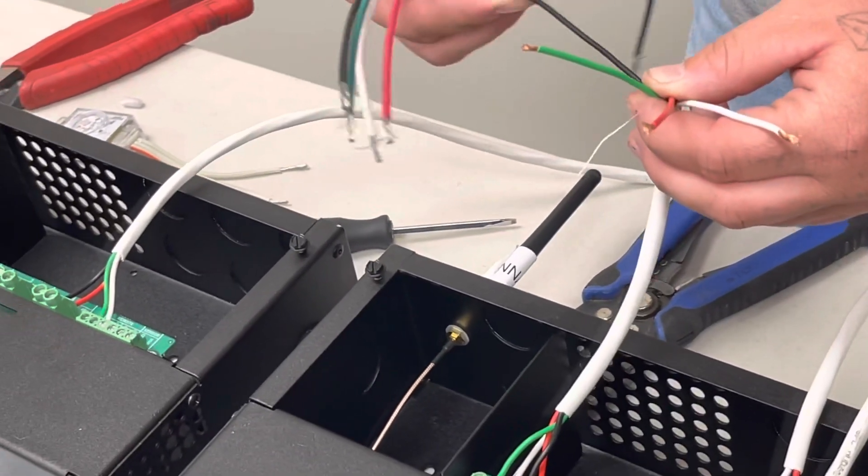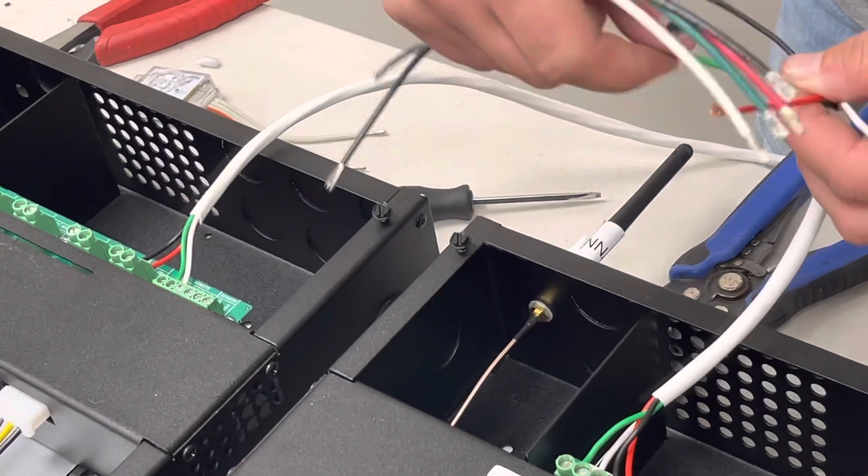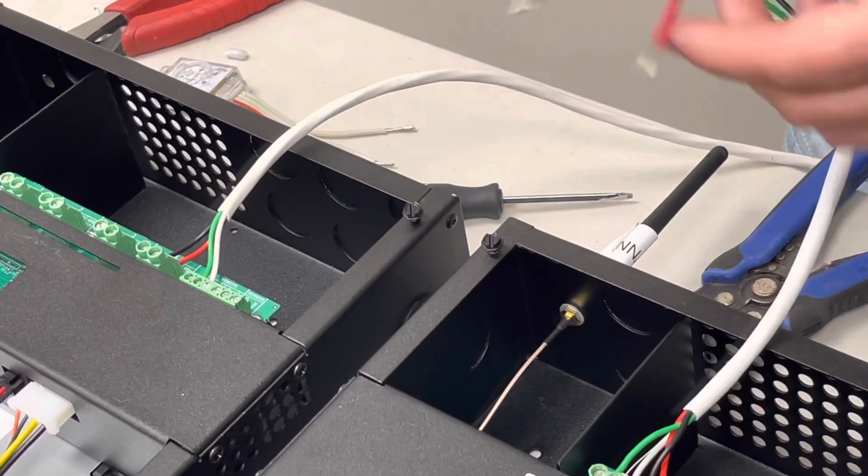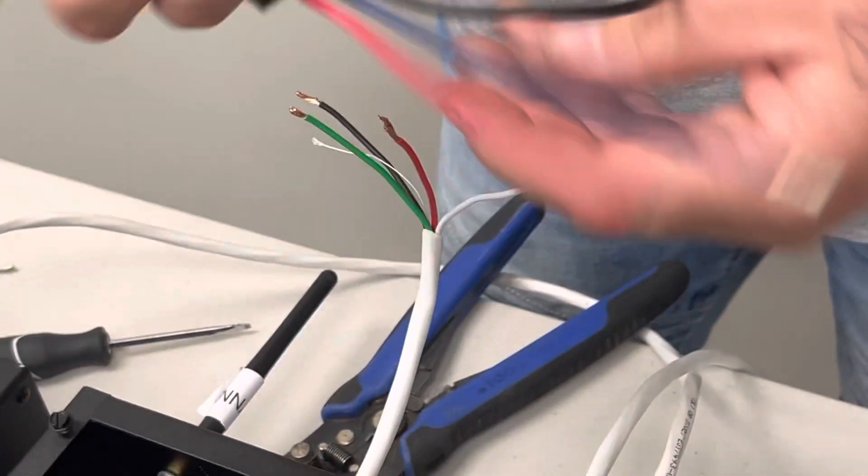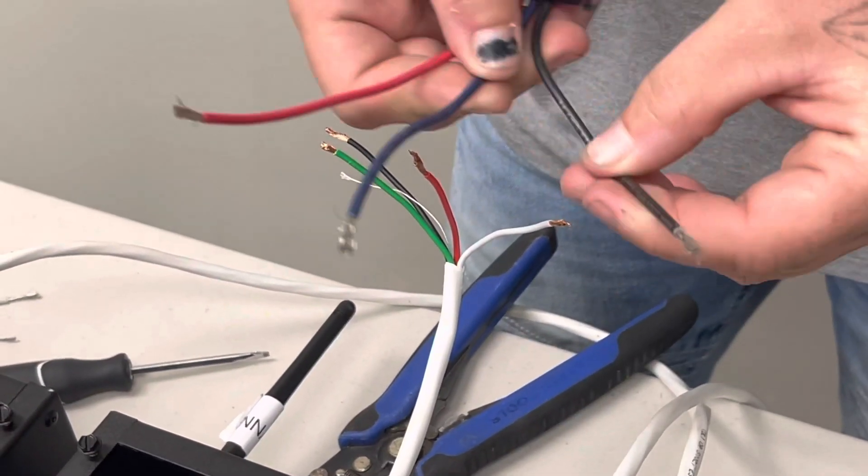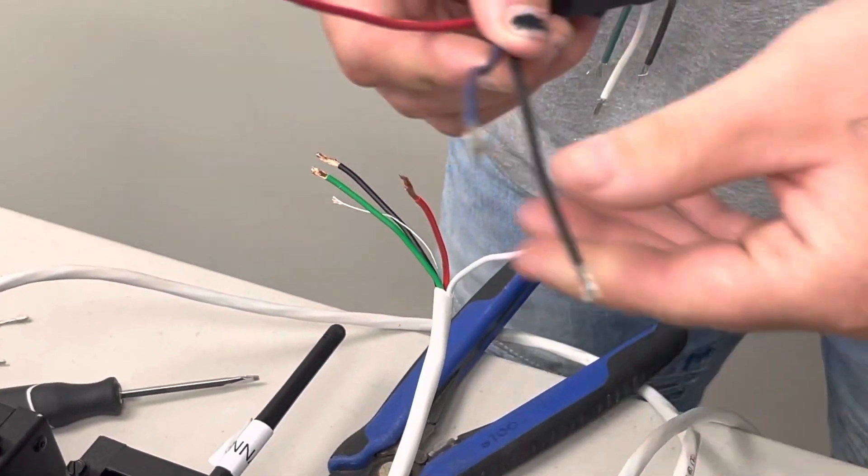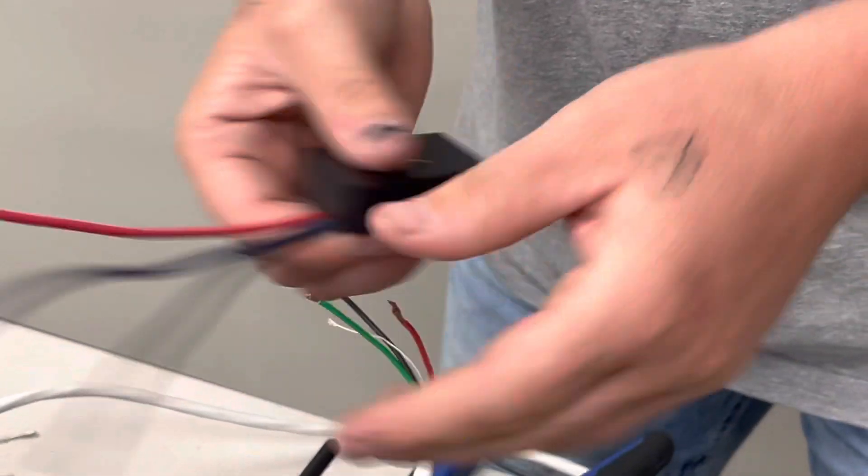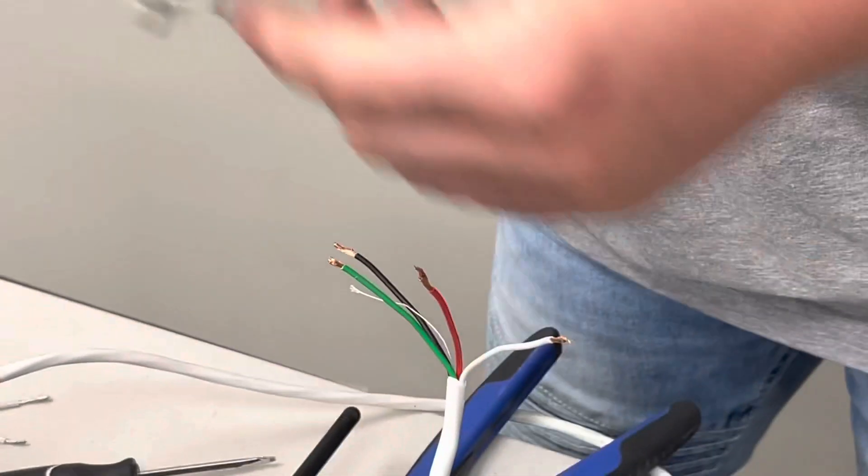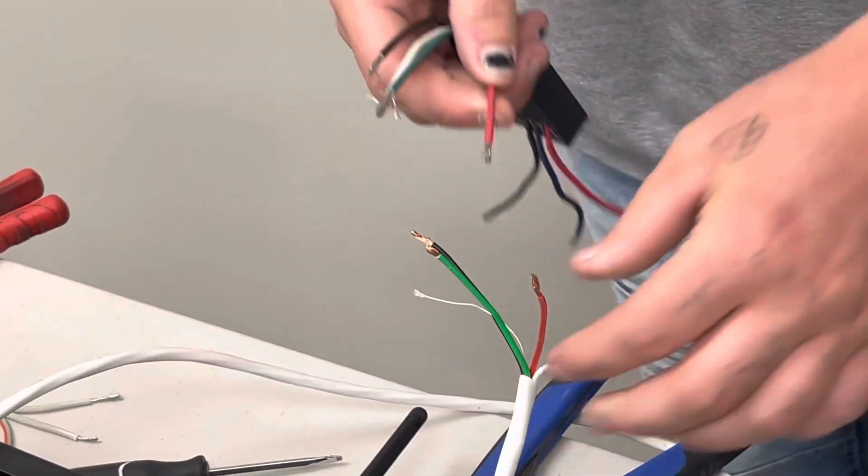So over on the receiver we have four wires right here, and then we have three wires. The three wires is where you're going to tie in your lights. Your lights have three wires as well. So just remember the four wires always go into four wires.